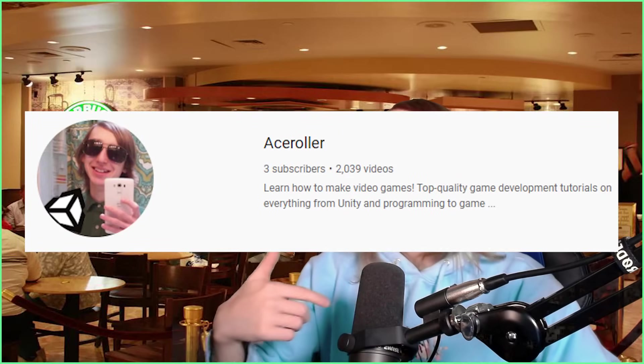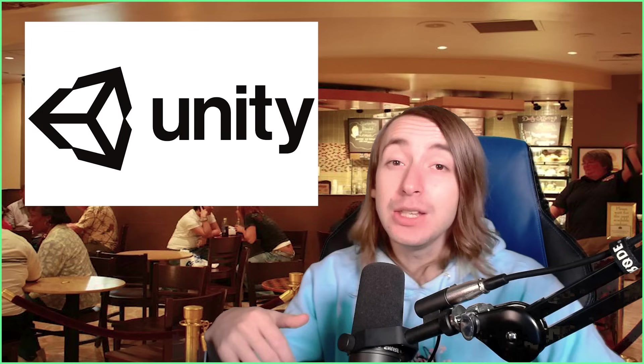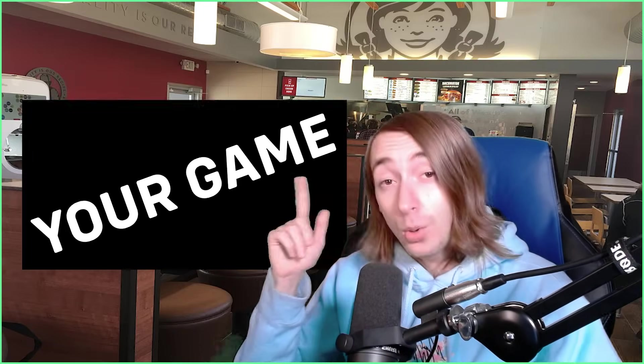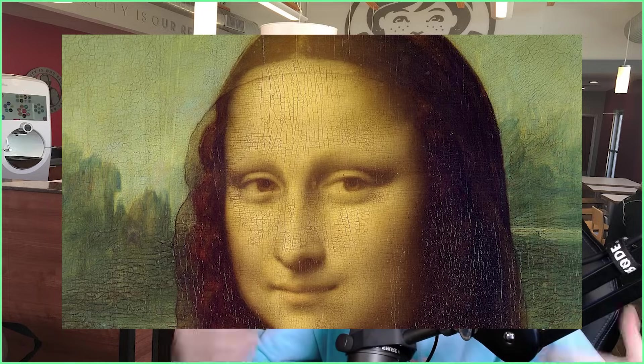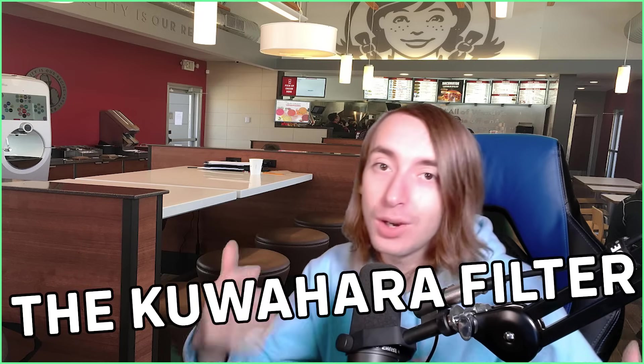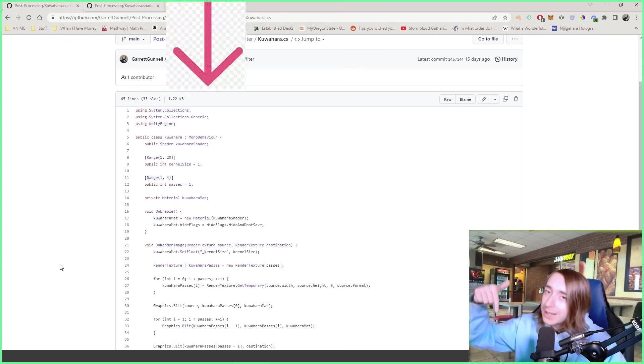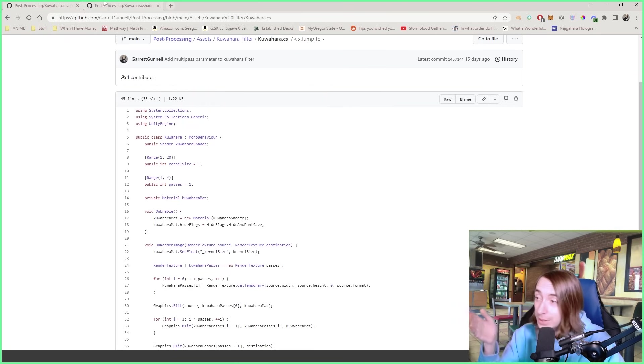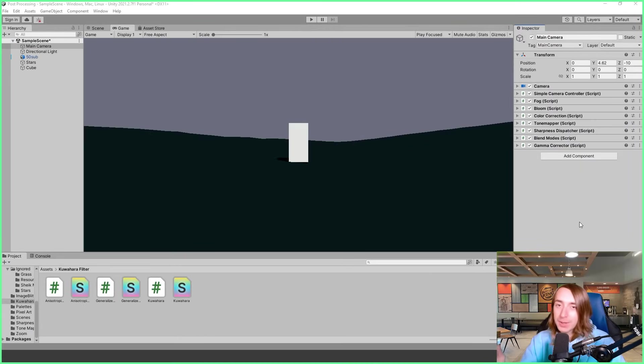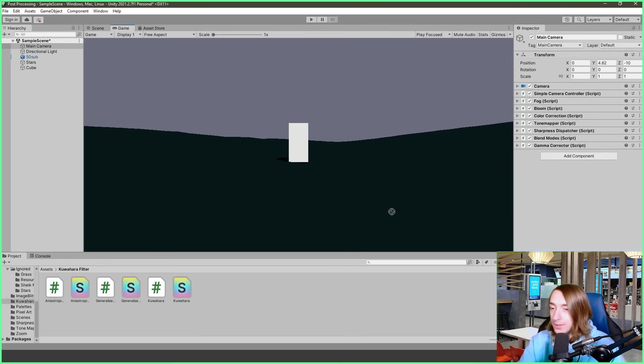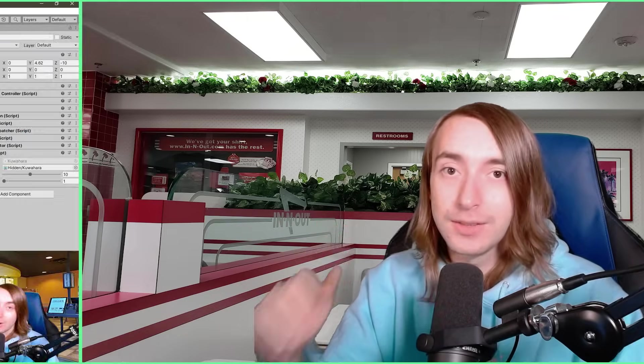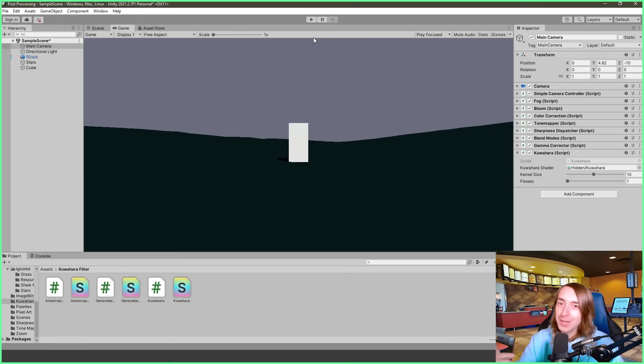What's up YouTube? AceRoller coming back at you with another sick Unity tutorial. Today I'm teaching you how to turn your game into a stylized oil painting masterpiece using the Kuwahara filter. Now, the first thing you're going to want to do is follow my link in the description to download the Kuwahara script and shader. The sick thing is that I already did all the work for you, so you don't even need to know how it works. Here I've got a game scene set up, but you don't need to worry about that. All you gotta do is take this script and drag it onto the camera and then you put this shader here in the field and then you up the kernel size a little bit. This is all you have to do. It's so easy. Alright, let's press play to see our new amazing visuals.